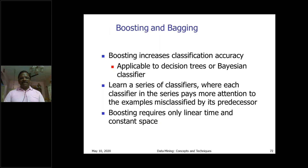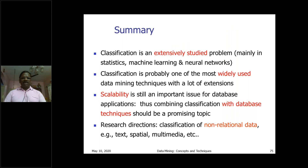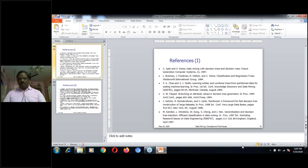Boosting and bagging are additional classification accuracy methods. If you obtain a smaller accuracy result, boosting techniques can increase the accuracy output. From this session we learn how classification is carried out, what scalability means, and what databases and techniques are used — including non-relational data sets, text, spatial, and multimedia sets.